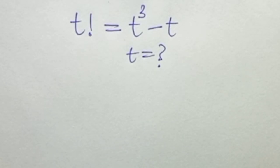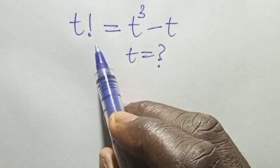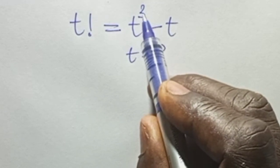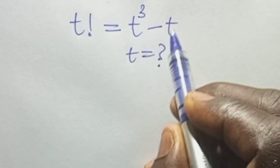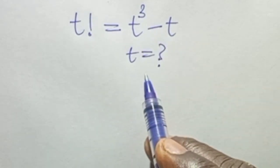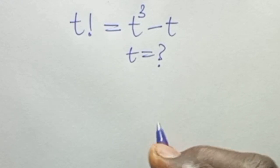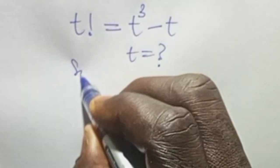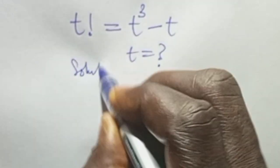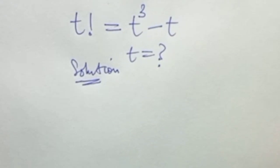Hello everyone, welcome back. Today we're solving t factorial equals t raised to the power 3 minus t, where t is the unknown. Let's work through the solution together.